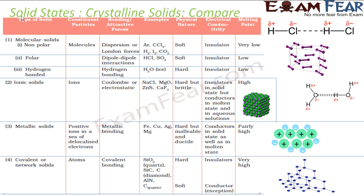The first thing we told is that there are four different types of crystalline solids: the molecular solids, the ionic solids, the metallic solids, and the covalent solids.